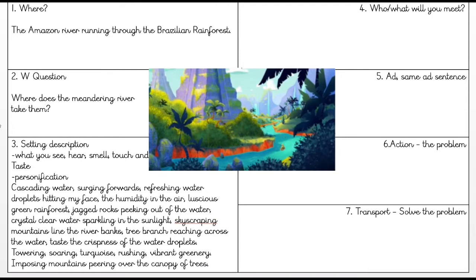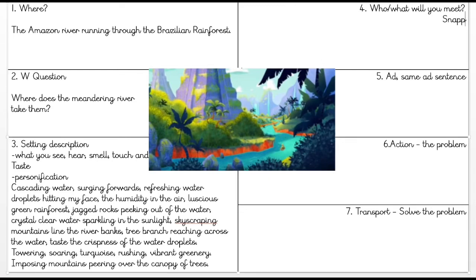This really depends on which setting you are in. If you are in the desert, you're not going to come across the Loch Ness Monster who lives in a lake. Or if you are in a volcano, you're not going to come across a polar bear — you've got to think about it a little bit realistically. We are in a river here, and I had an idea that we could meet some snapping, angry crocodiles. You can add as much information as you want, including adjectives about who you meet, or keep it nice and simple like I have done.